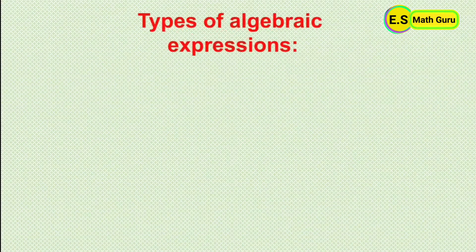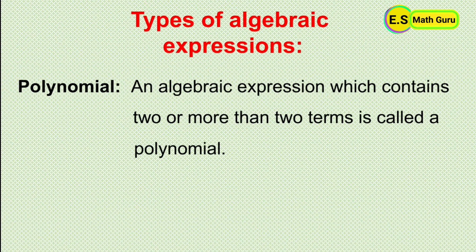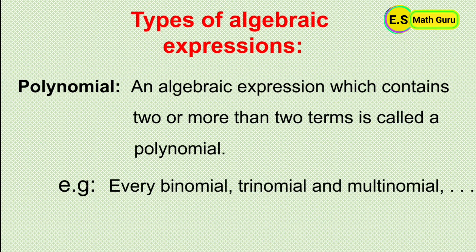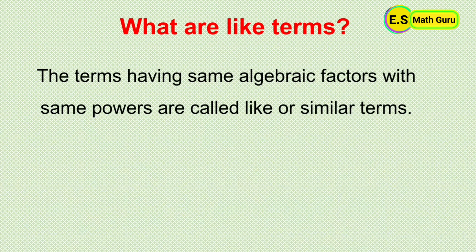Polynomial: an algebraic expression which contains two or more than two terms is called a polynomial. For example, every binomial, trinomial, and multinomial is a polynomial.